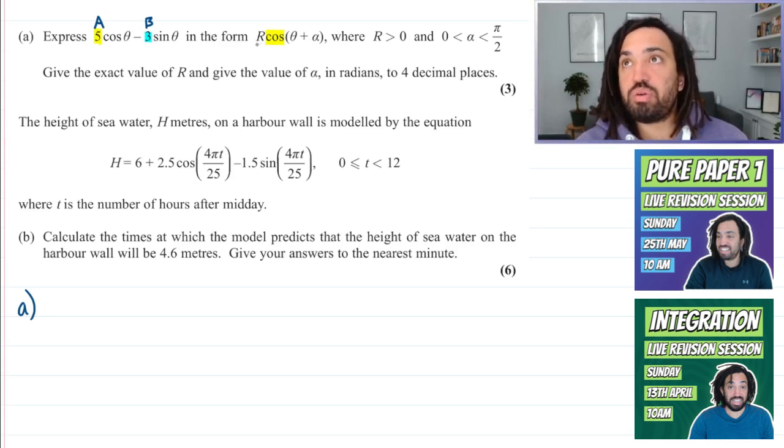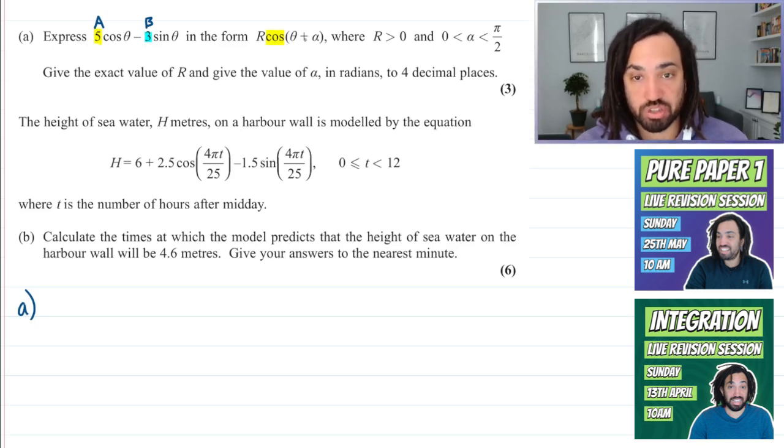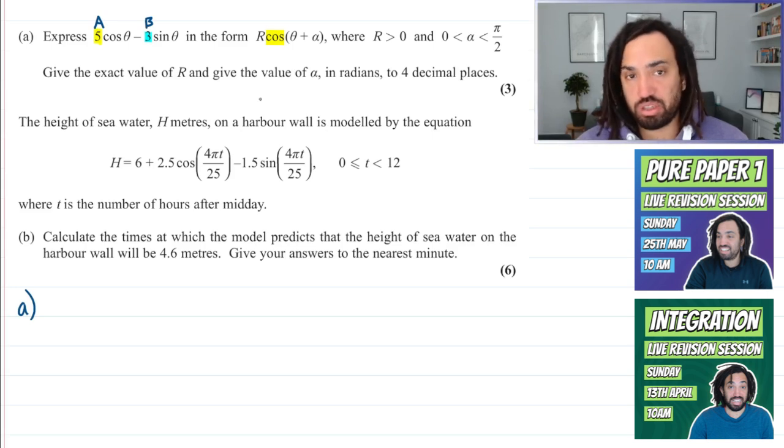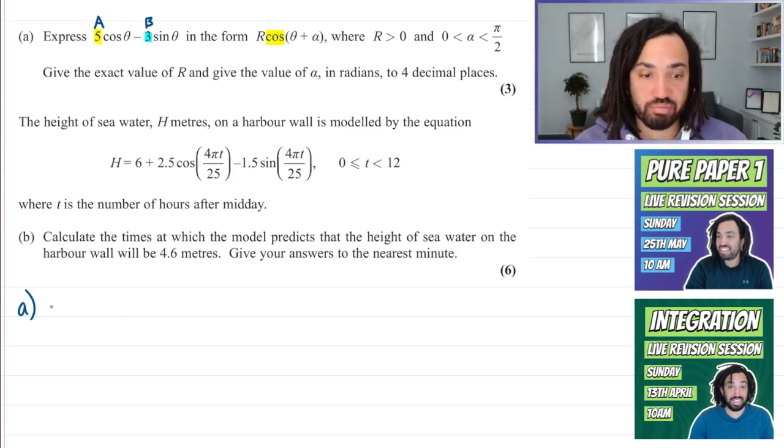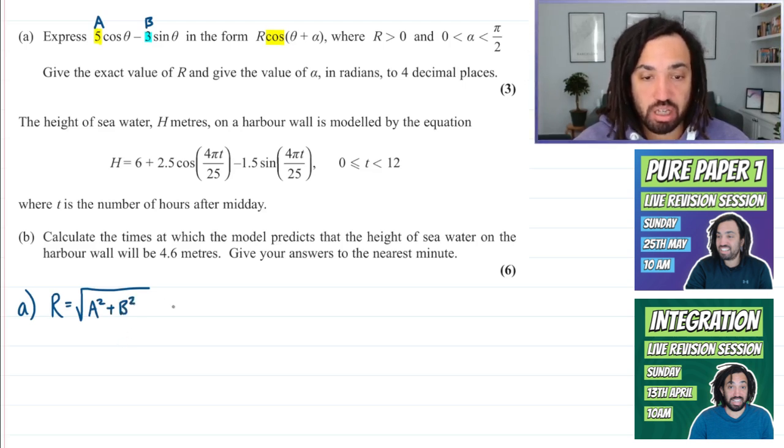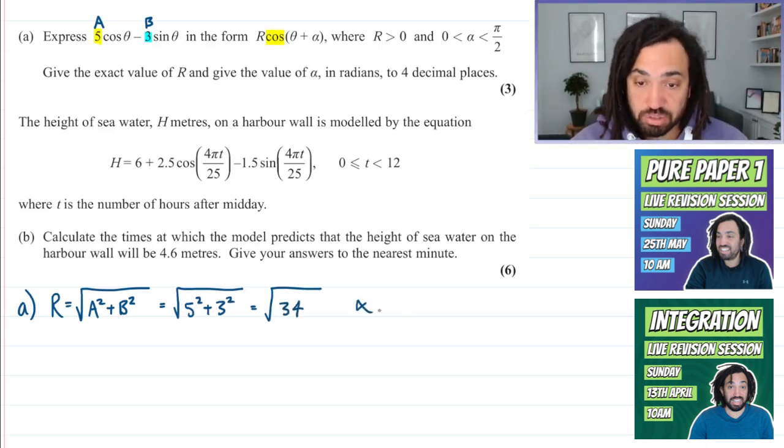We're going to label this one b. We're not going to be concerned about the minus sign here because when we do the compound formula for cos, the sign swaps over. I'm just looking at the 5 and the 3. Remarkably, R is always the square root of a squared plus b squared, which is equal to the square root of 5 squared plus 3 squared, which equals the square root of 34.